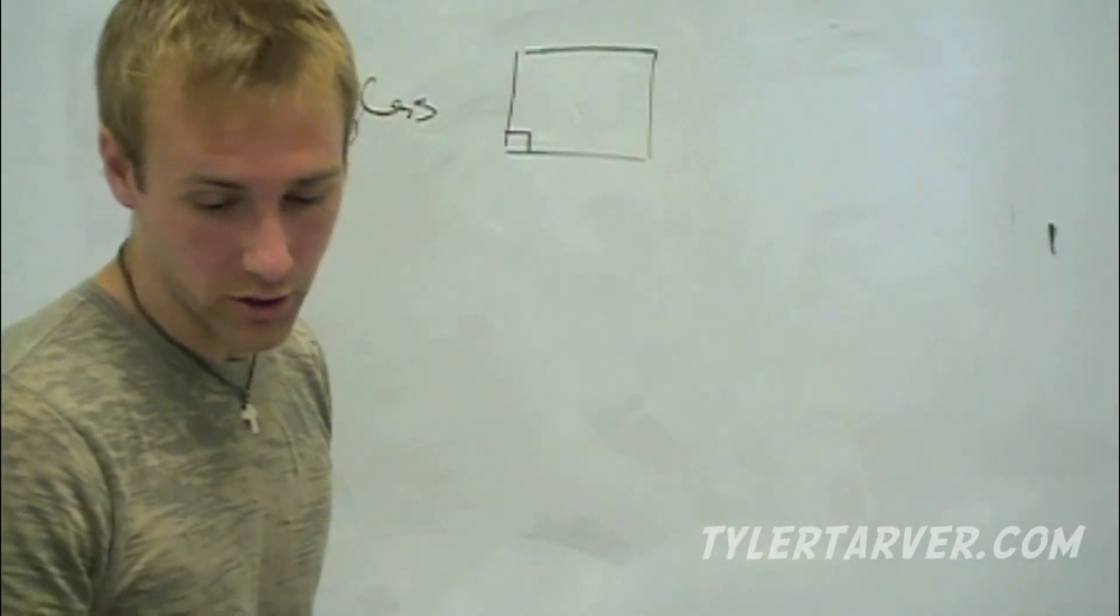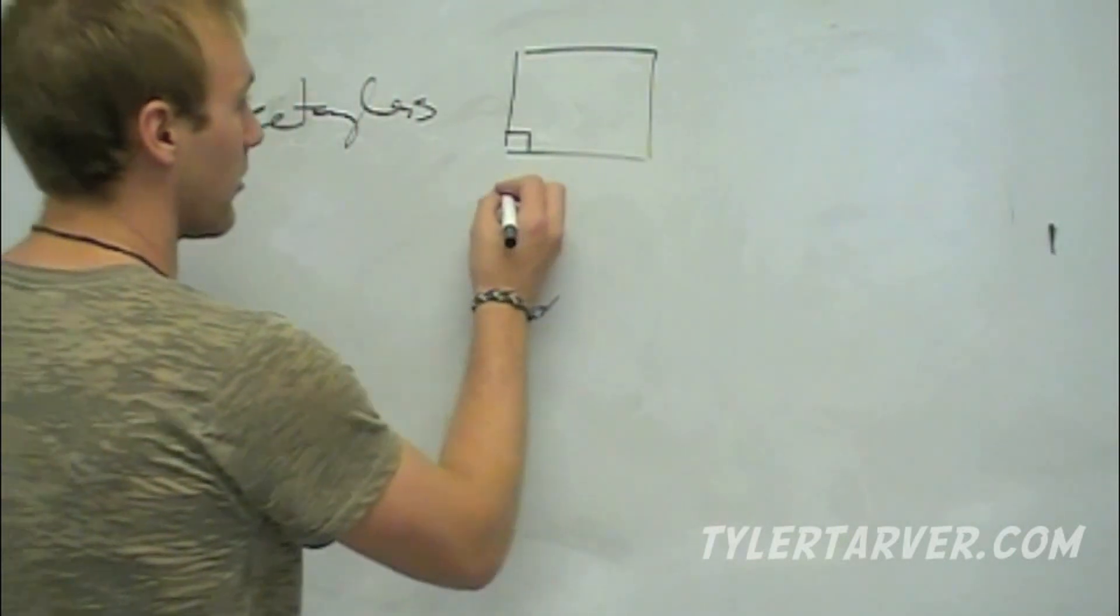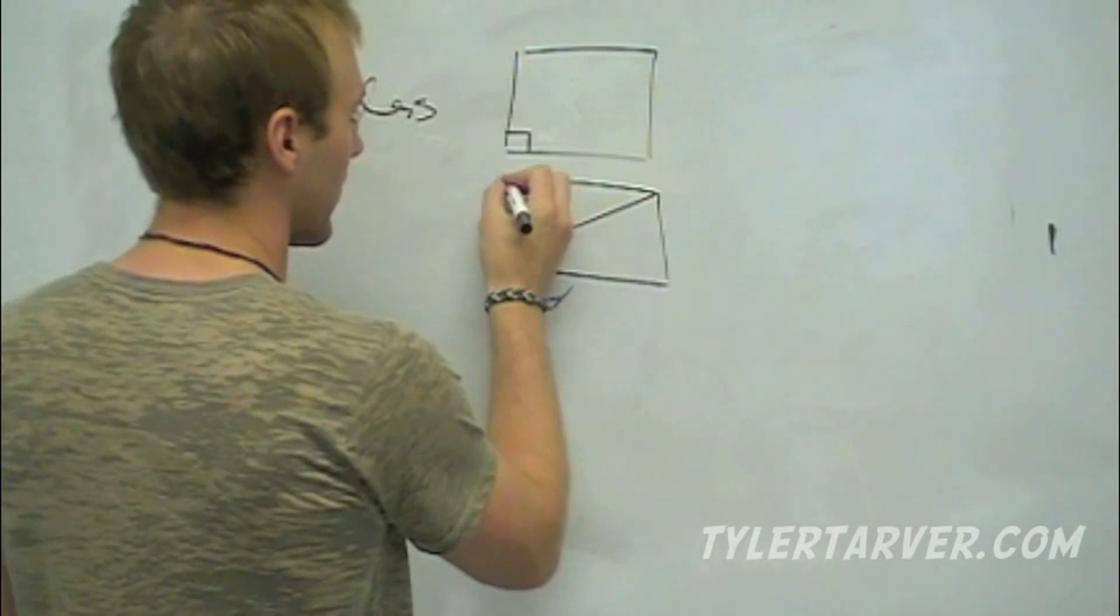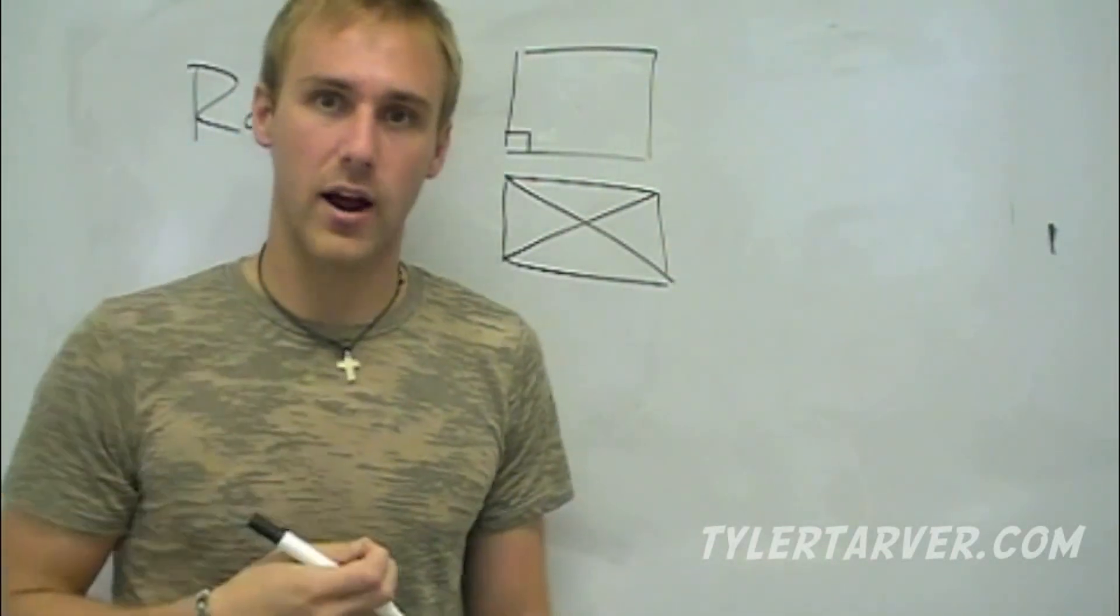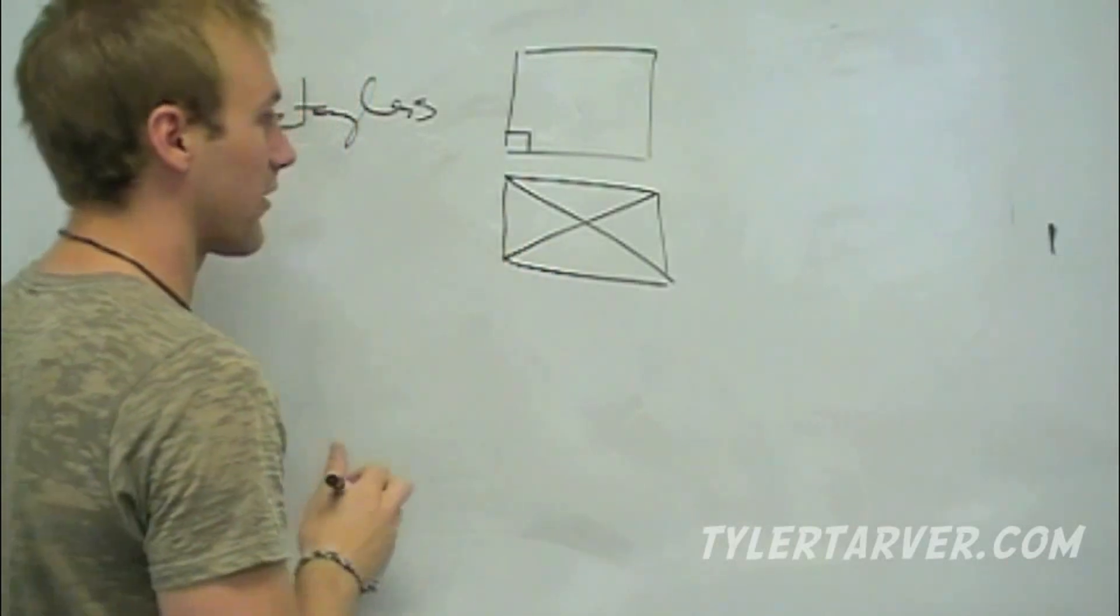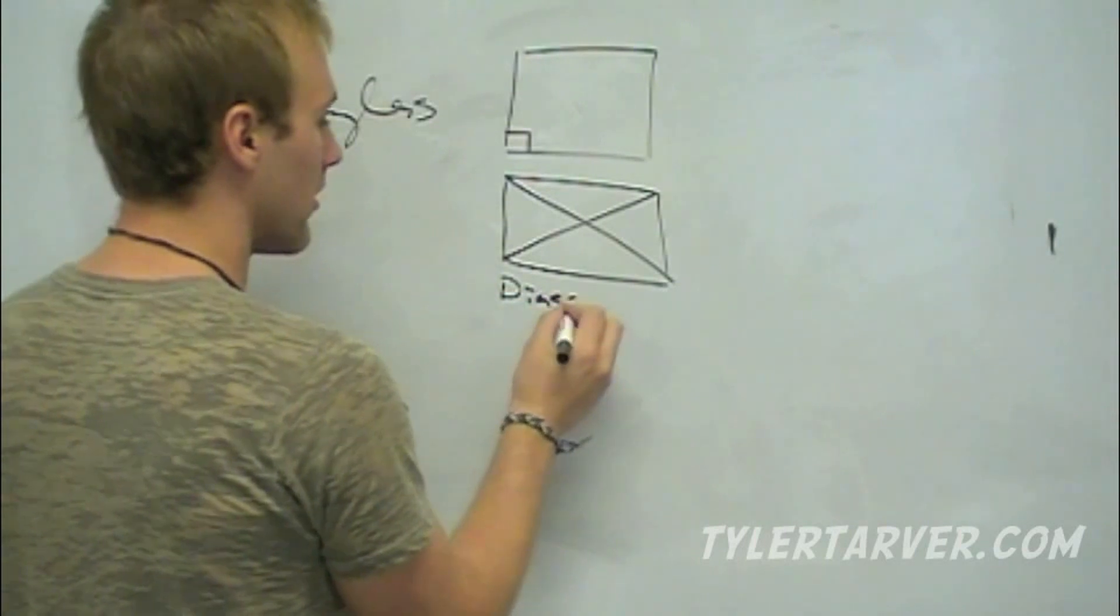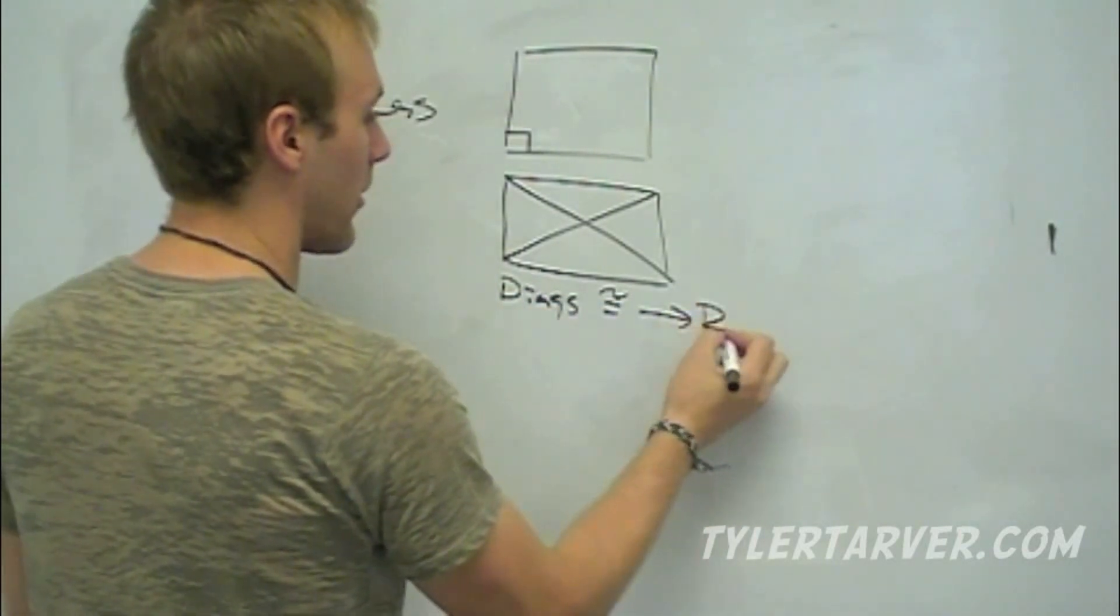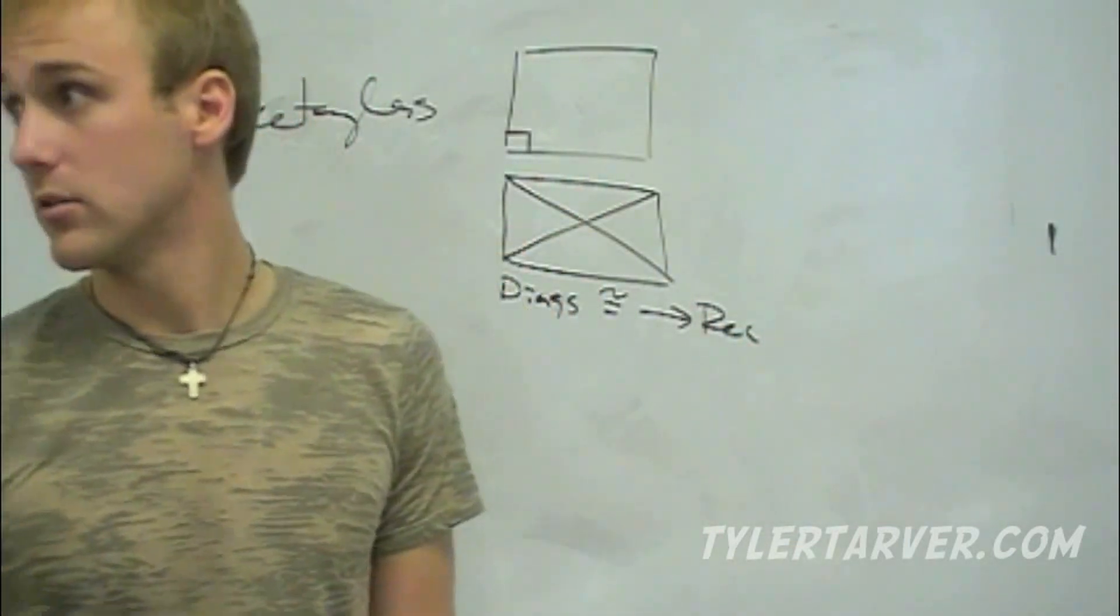Now the second thing you can do to find out is if you have a rectangle—or sorry, I keep saying rectangle, I'm sorry. If you have a parallelogram, if you know this sucker right here is a parallelogram, and then we know that these diagonals are congruent, the diagonals are congruent, then we know it has to be a rectangle. So if you've got a parallelogram with the diagonals congruent, it's a rectangle.